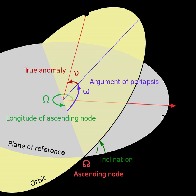For a satellite orbiting the Earth directly above the equator, the plane of the satellite's orbit is the same as the Earth's equatorial plane, and the satellite's orbital inclination is zero degrees. The general case for a circular orbit is that it is tilted, spending half an orbit over the northern hemisphere and half over the southern. If the orbit swung between 20 degrees north latitude and 20 degrees south latitude, then its orbital inclination would be 20 degrees.